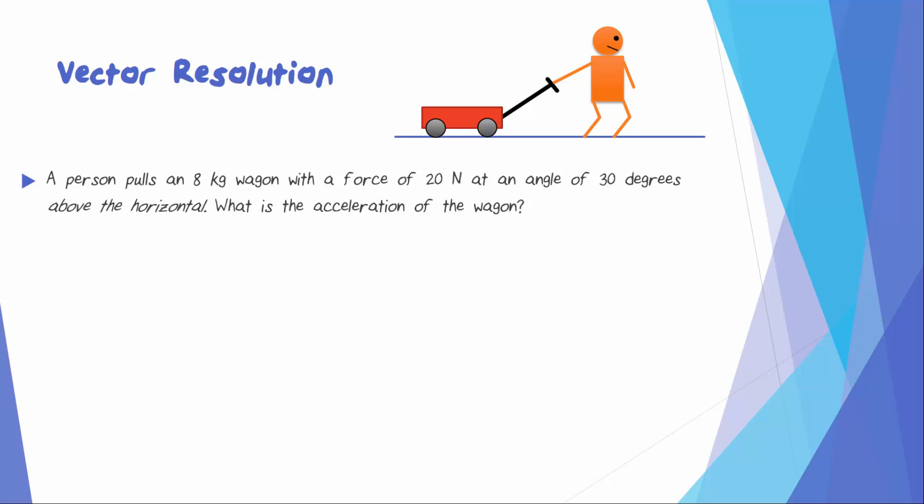Let's start with a free body diagram. We have the 8 kg wagon and a 20 N force at an angle of 30 degrees above the horizontal. That dashed line represents what horizontal would be.